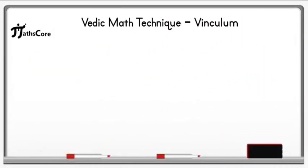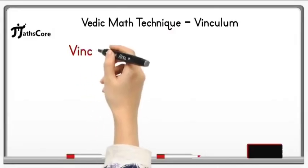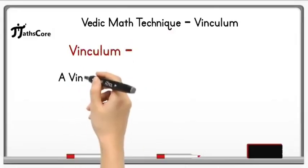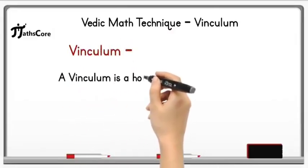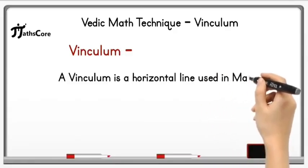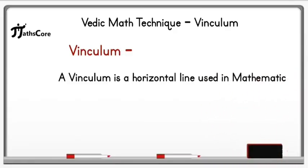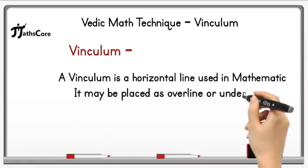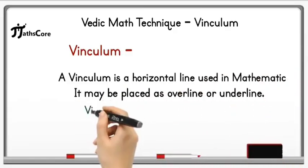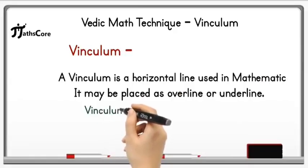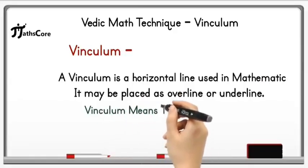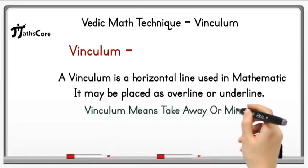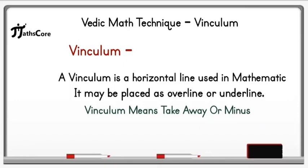So let us learn about vinculum. What is meant by vinculum? A vinculum is a horizontal line used in mathematics. It may be placed as an overline or underline. For Vedic mathematics, we use the concept of vinculum as a 'take away' or minus.